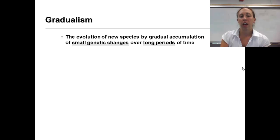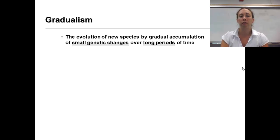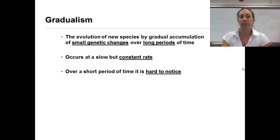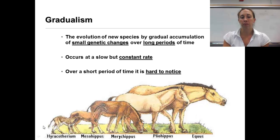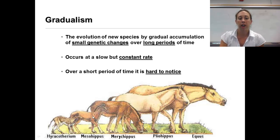Gradualism is the evolution of a new species by gradual accumulation of small genetic changes over long periods of time. It occurs at a slow but constant rate — over a short period of time, it is hard to notice. For example, the horse and its ancestor: it took a very long time to slowly evolve into what we see today.